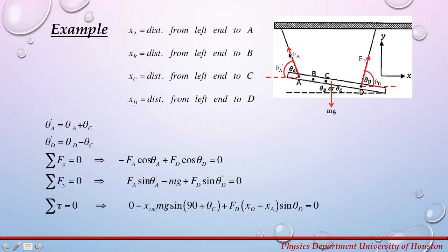First, you are going to draw a free-body diagram. You have force F_A in one direction, F_D in another direction, and the gravitational force downward. It is important to remember that the protractors measure angles between the torque bar and the object attached to them — in this case, the springs. Since the torque bar is inclined, angles θ_D and θ_A are not the same as angles measured with respect to the horizontal x-axis and vertical y-axis. So we must first correct these angles at points A and D and write their values with respect to the horizontal x-axis.